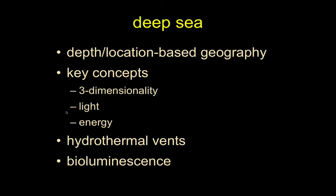Here's a quick outline for today. We're going to review location-based names for places from a couple lectures ago. The key concepts driving patterns in the deep ocean are the three-dimensionality of the aquatic world — mostly different from the two-dimensional world you and I live in. Light is a big theme: lack of light, generating light. And then energy — where does it come from to power these systems? We'll look at two particular examples: hydrothermal vents, which are sources of energy, and bioluminescence, which is the source of light in much of the deep ocean.